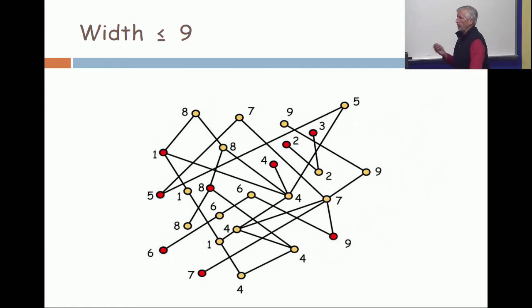And therefore, the width of this poset is nine. The red points form an anti-chain of size nine, so the width is at least nine, and the coloring shows that the width is at most nine. So I got at least nine, at most nine, the answer is nine.